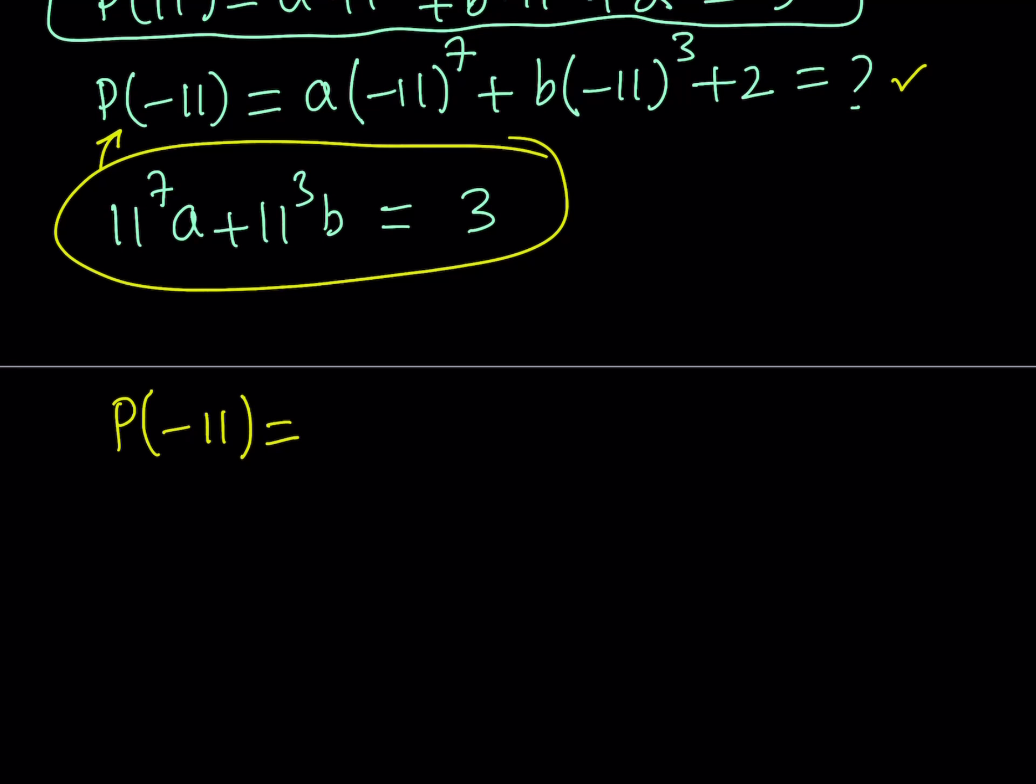So P of negative 11. Now notice that 7 is an odd number. So when you raise a negative number to an odd power, the answer is going to be negative. So we can basically write this as negative 11 to the 7th power multiplied by A. And the same thing goes for negative 11 to the 3rd power. So we can write it as minus 11 to the 3rd power multiplied by B. And then plus 2 is what I'm trying to find. So this is what I'm looking for.